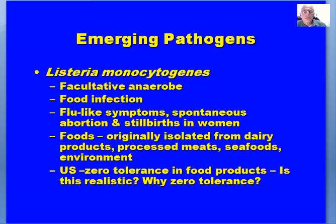Listeria monocytogenes is a facultative anaerobe that causes food infection. Typical symptoms are flu-like, but in pregnant women it can cause spontaneous abortion and stillbirths, making it a pathogen of major concern. It was originally isolated from dairy products, processed meats, and seafood. It is found extensively in the environment. The US has zero tolerance for Listeria in food products — a question worth considering: why zero tolerance, and is this realistic? Other countries do not necessarily have zero tolerance for Listeria monocytogenes in food products.